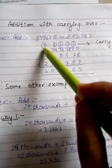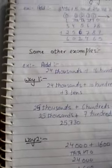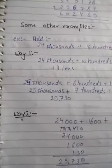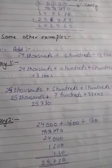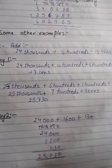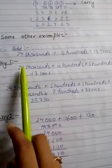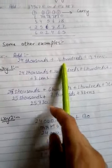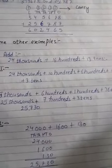Now there are some other kinds of examples. You have to learn new things now. The class is new, you are big enough to understand difficult things also. See, the number is written in expanded form: 24 thousand plus 16 hundred plus 13 tens. You have to add these numbers.